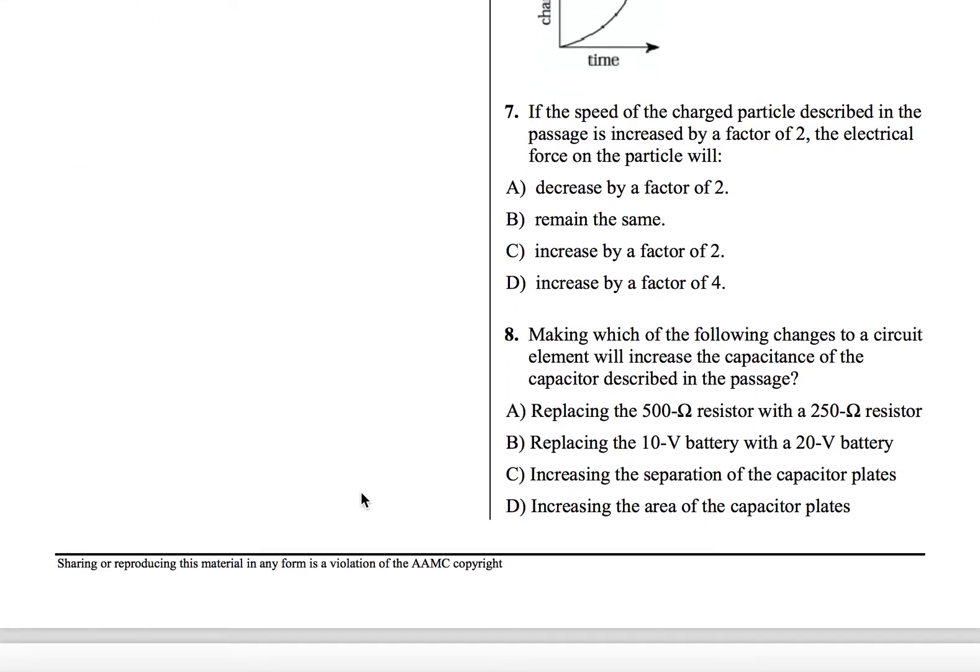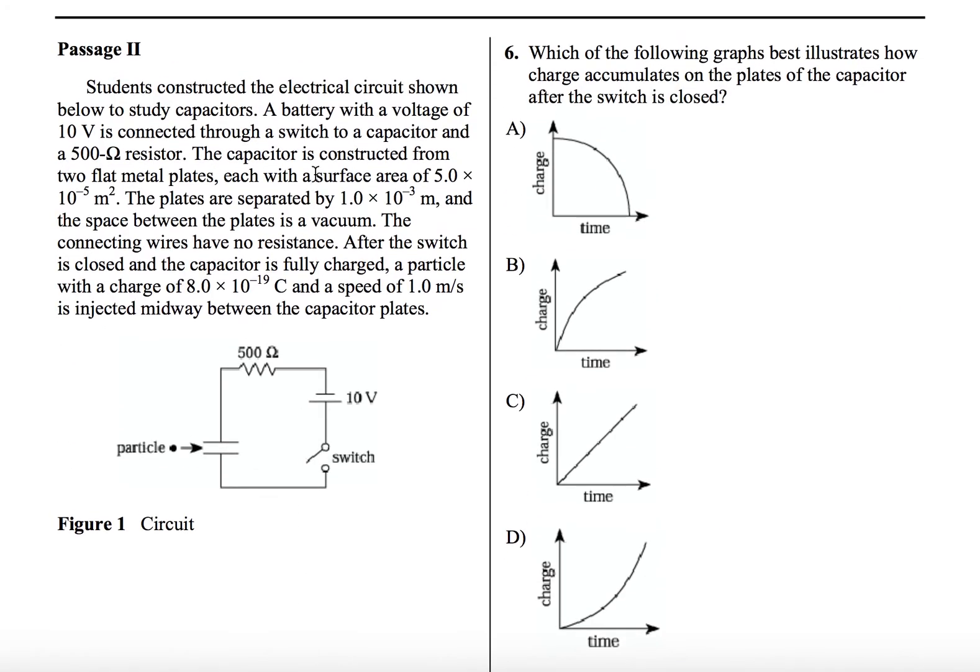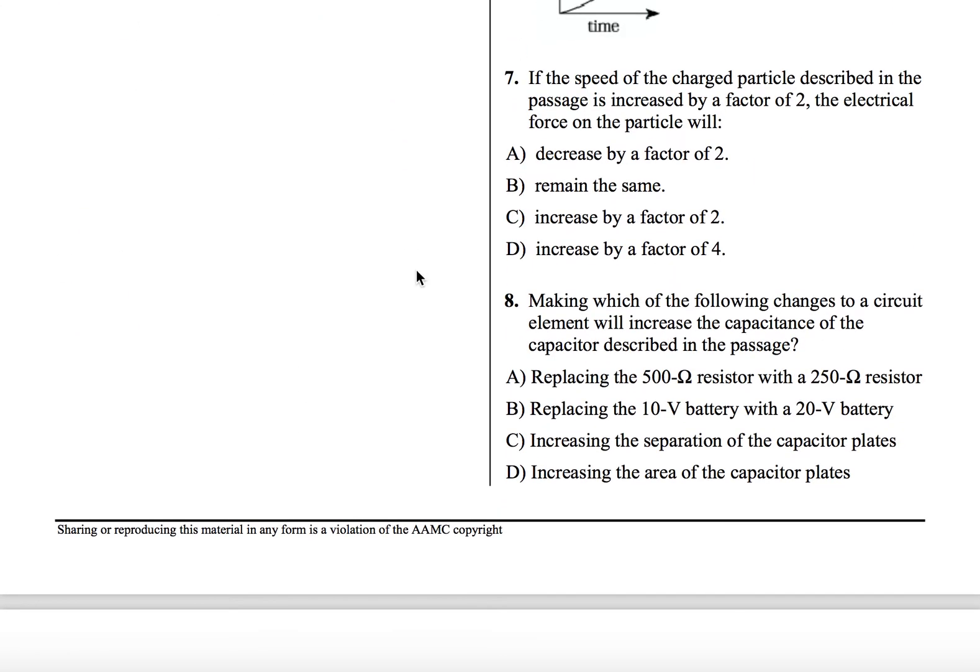Number eight. Making which of the following changes to a circuit element will increase the capacitance of the capacitor described in the passage? Again, so maybe for capacitance, there could be some intuition as to how you would increase it. But for the most part, I want you to think in terms of equations. So you've got to go back into your head and think of the equation of capacitance. And if you remember, it's C is equal to epsilon naught A over D. So epsilon naught is some constant. A is the surface area of the plates. So that's a number that's given over here. And D is the distance between the separation between the plates.